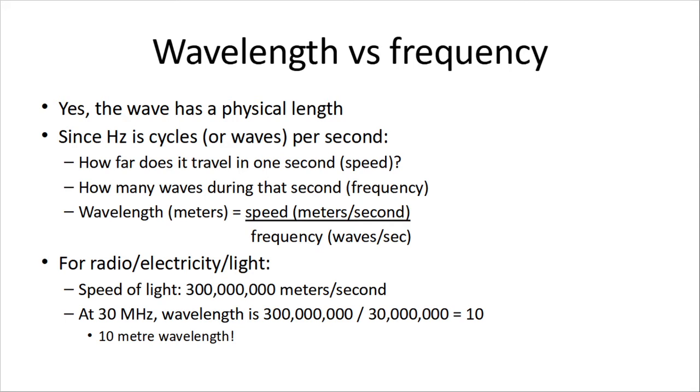Wavelength versus frequency. Yes, the wave has a physical length, and it's based on the speed of the signal. Since hertz is cycles or waves per second, how far does a wave travel in one second? What's its speed? How many waves happen during that second? That's the frequency. So, the wavelength is the speed over the frequency.